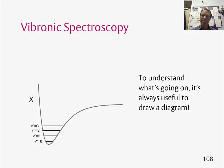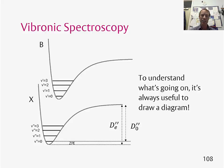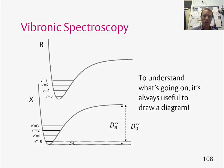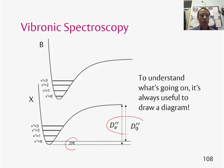When you excite an electron, you go from this ground electronic state to an excited electronic state B, which also has vibrational energy levels: V prime equals 0, 1, 2, 3, and so on. I've also added in the zero-point energy, which we've talked about before, and various definitions of the dissociation energy of the molecule.